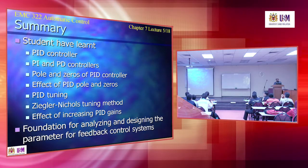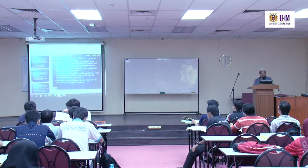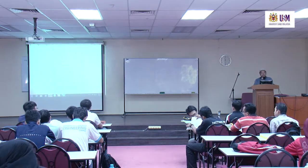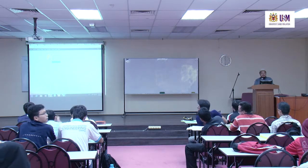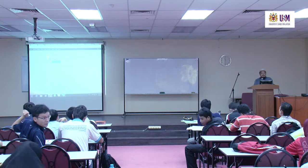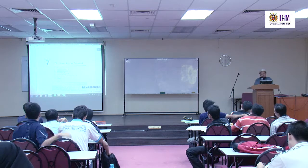KU is equal to KP where the system becomes marginally stable. The period of the sustained oscillation is called the ultimate period TU. When you reach marginal stability, you have a sine wave with constant amplitude — the amplitude does not reduce and does not increase. The time from one peak to another peak is called the ultimate period.